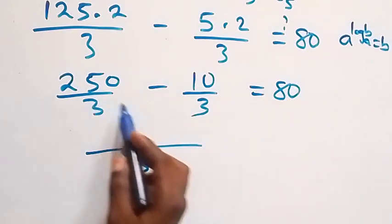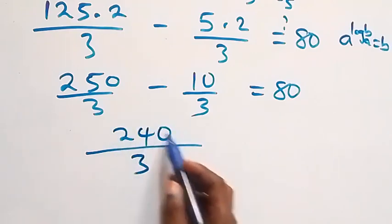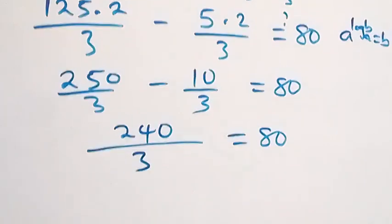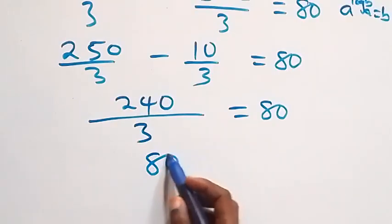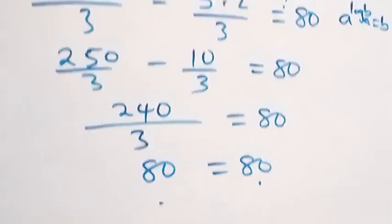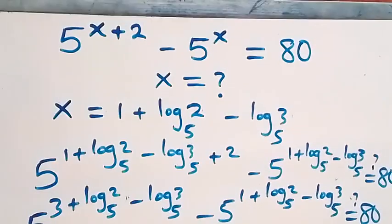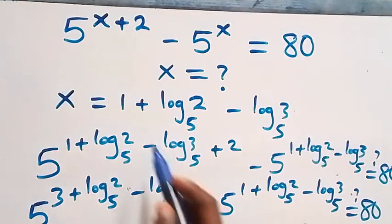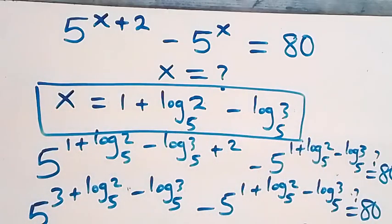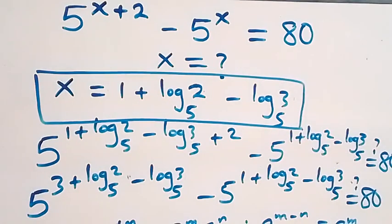240 over 3 is 80, which equals 80. The left-hand side equals the right-hand side, and hence we conclude that x equals 1 plus log₅2 minus log₅3 satisfies this problem. Thank you for watching. Don't forget to subscribe for more videos, turn the notification bell on, share this video, give me a thumbs up, and put your comment in the comment section. See you next class, bye for now.